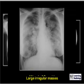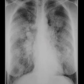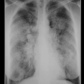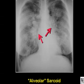This is an example of alveolar sarcoid. At first glance this looks like airspace disease, but if you look carefully at the periphery of the disease, you can see that it is actually interstitial in nature. The red arrows point to the bilateral hilar adenopathy.